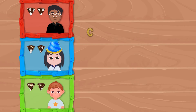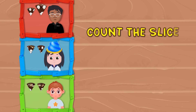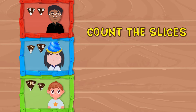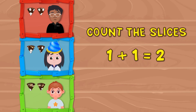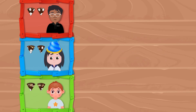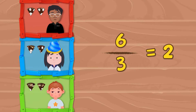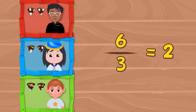Let's count the number of slices each person was served. 1 plus 1 is equal to 2 slices of cake. This means when we divide 6 by 3, we get 2 as the answer.